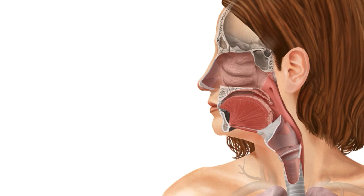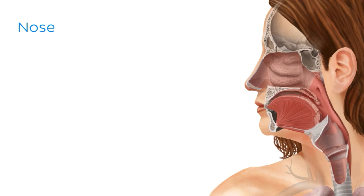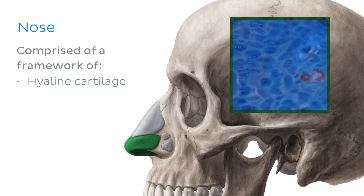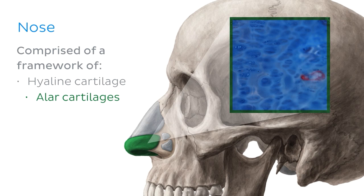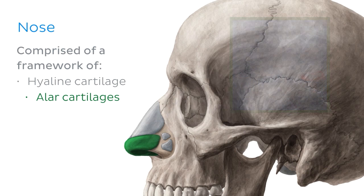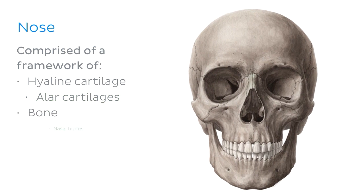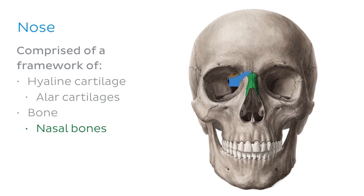The first organ of the upper respiratory tract that we see here is the nose, and it's the only part of the respiratory tract that's visible externally. The structure of the nose is comprised of a framework of hyaline cartilage, such as the alar cartilages that form the external nares, and bone — for example, the nasal bones — which form the bridge of the nose.